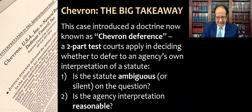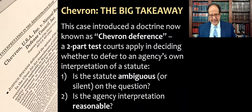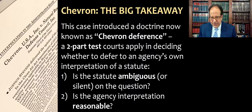To this day, every term we get at least one or two Chevron cases from the U.S. Supreme Court. This is also in the casebook I use for my statutory interpretation and regulation class. So this is definitely one to know by name, know the bottom line, and know a little bit about, because it really matters not only for your class but for practice. Here's your big takeaway: this case introduced a doctrine now known as Chevron deference — a two-part test that courts apply in deciding whether to defer to an agency's own interpretation of a statute.